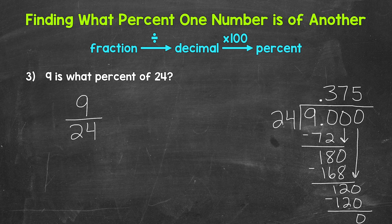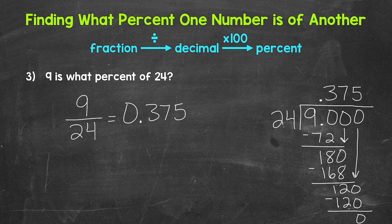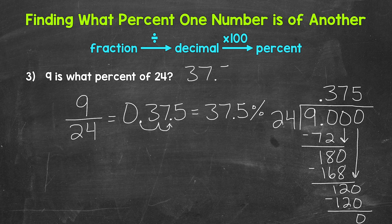Now we have that clean-cut zero. We went all the way over within our division problem, so we are done. 9 divided by 24 equals 0.375 — 375 thousandths. Now we need to convert that decimal to a percent by multiplying by 100. Move the decimal twice to the right — once, twice — and the decimal goes between the 7 and the 5. That gives us 37.5 percent. So 9 is 37.5 percent of 24.